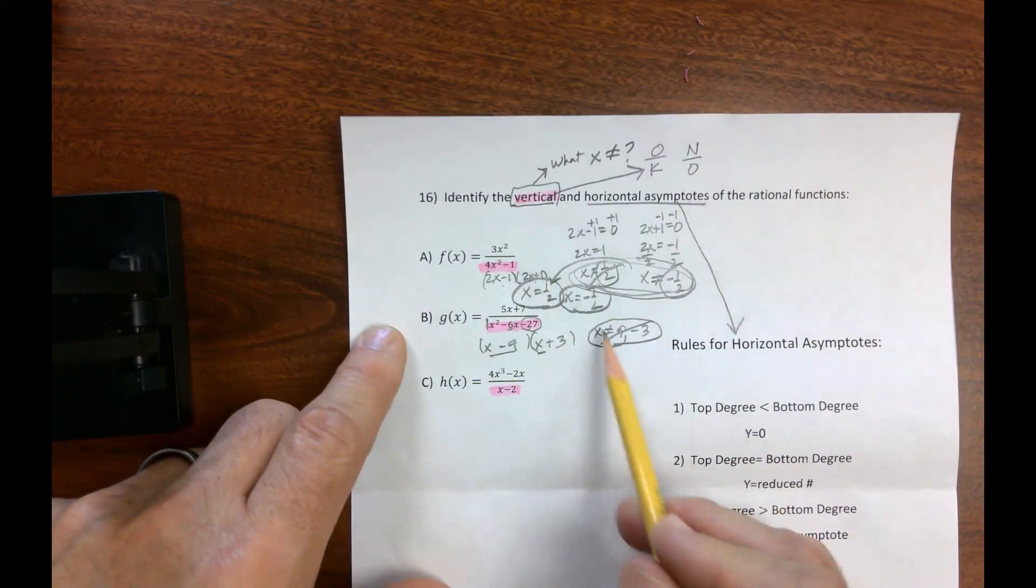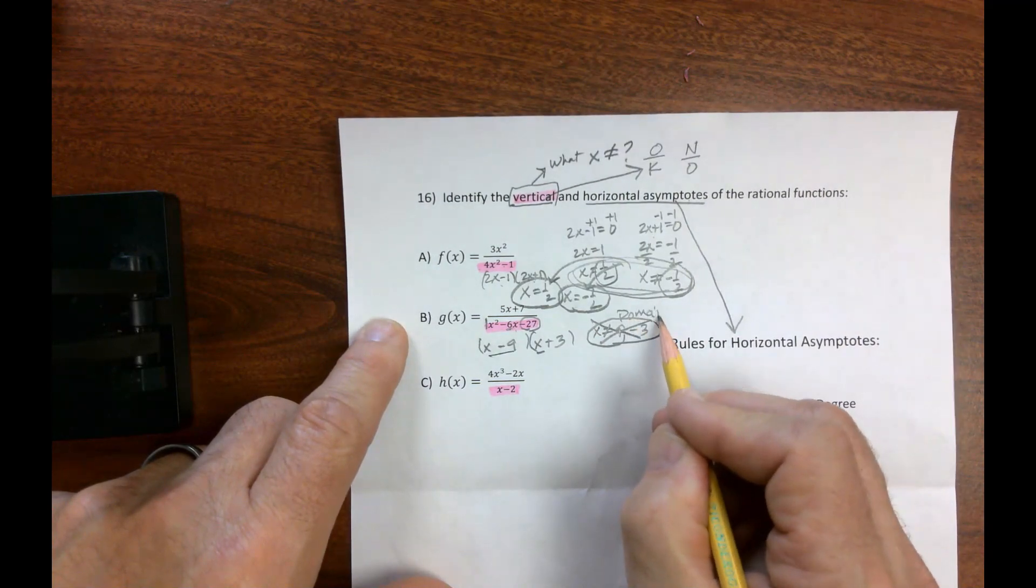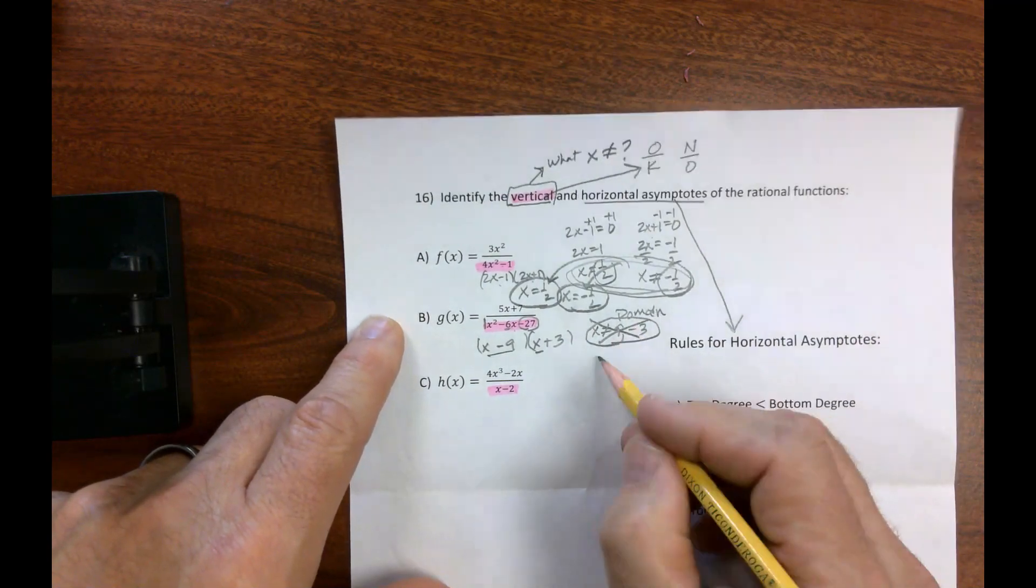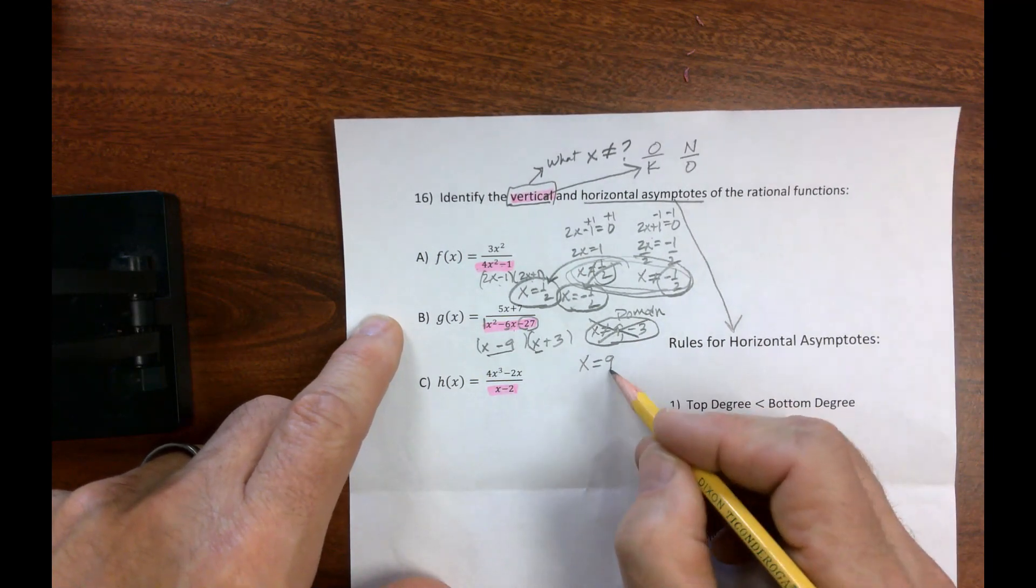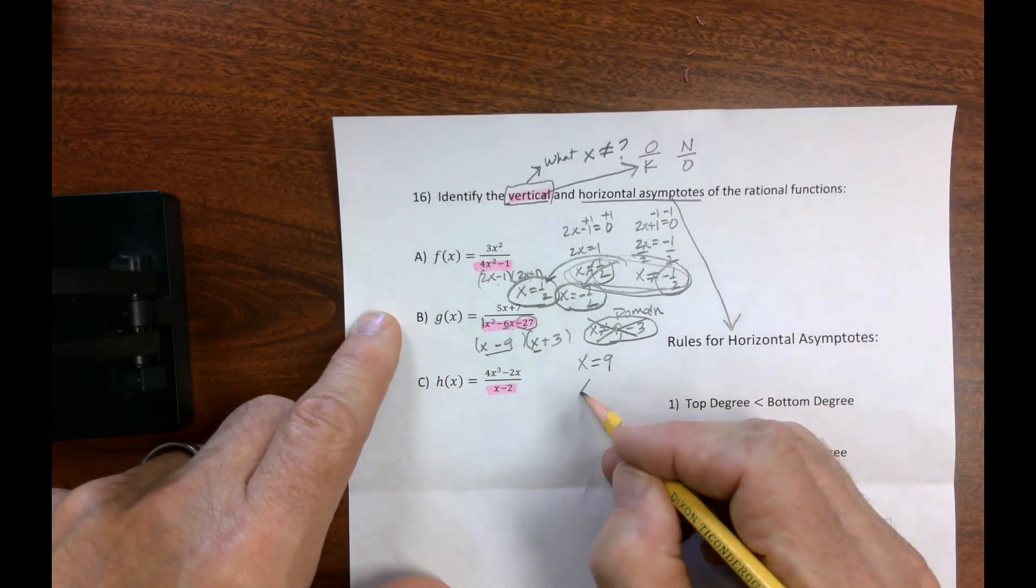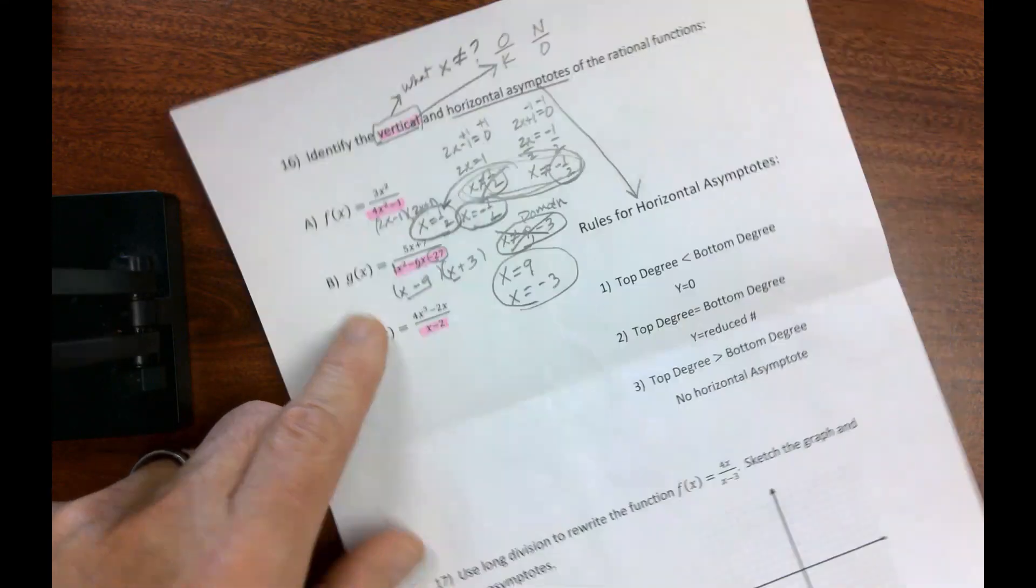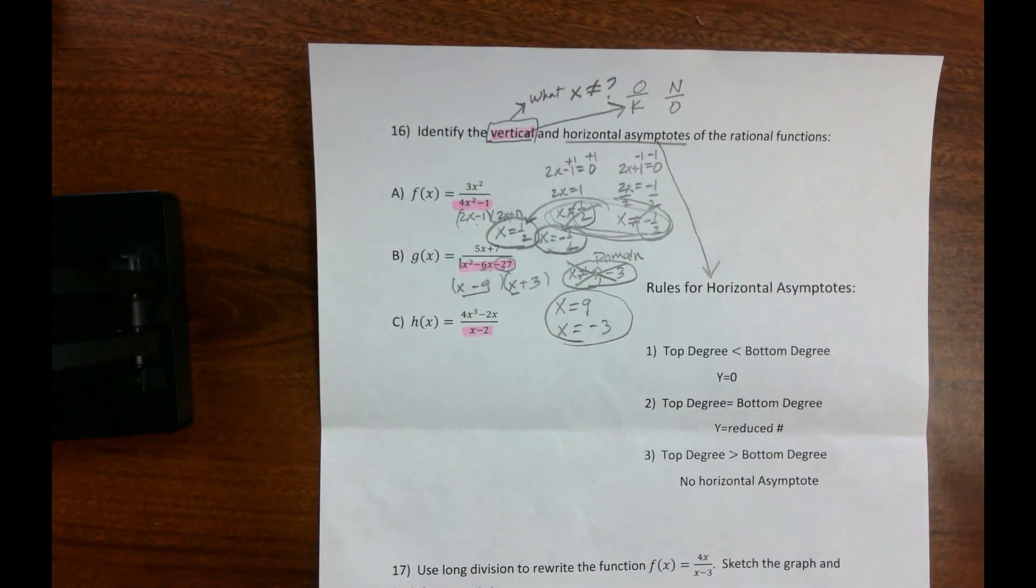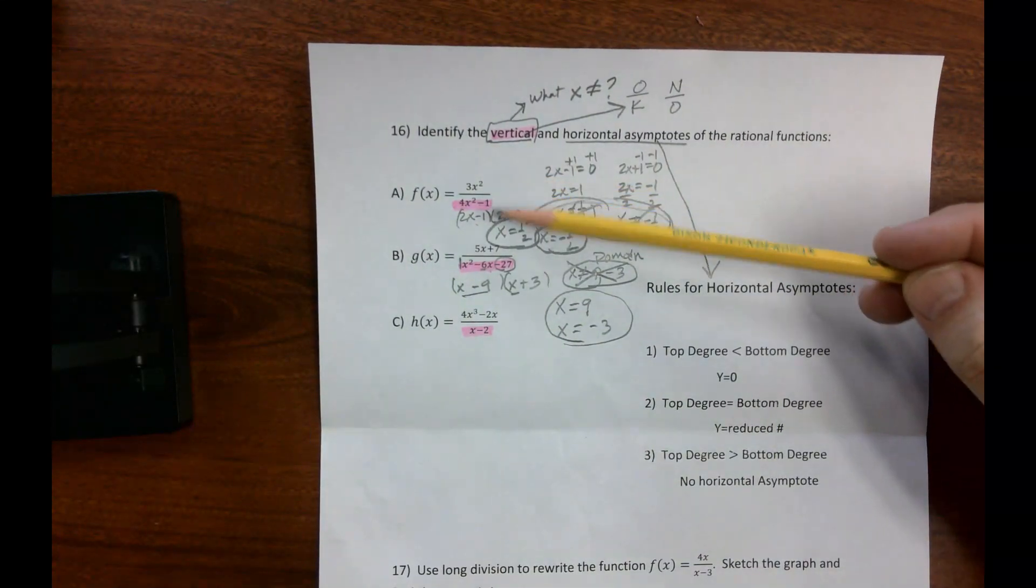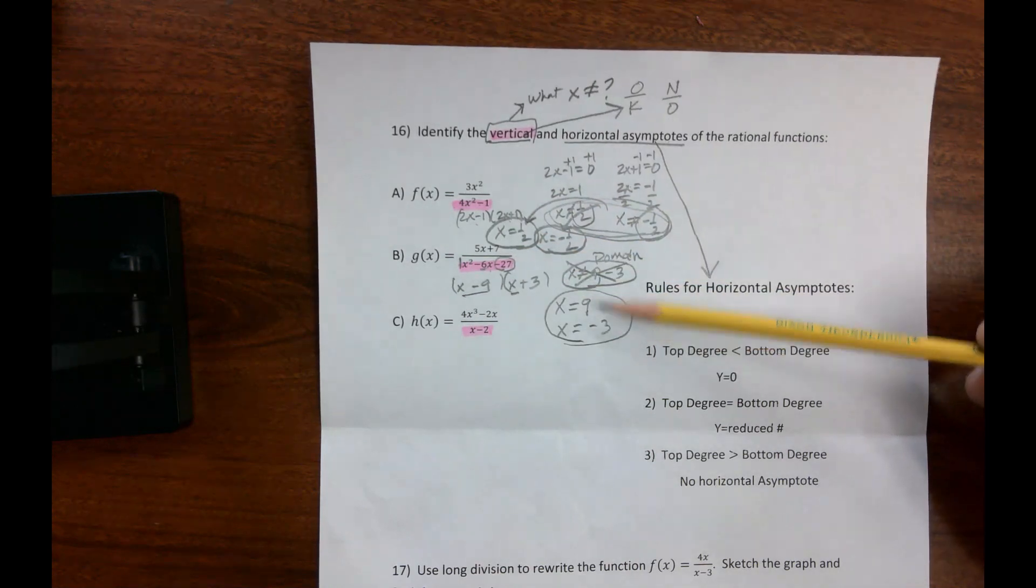So back to this, it's not x doesn't equal, that's my domain, that's what x can't equal, so that on our graph, we would get x equals 9 for a vertical asymptote, and we would get x equals negative 3, so I gotta correct that a little bit. They want the equations of the asymptotes. And again, you can always type this in decimals, type this in decimals, and you will see that the graph doesn't cross these vertical asymptotes.